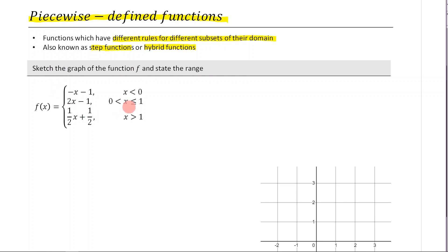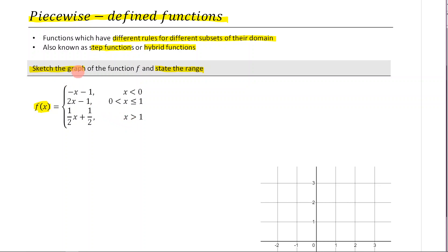The first thing we're going to do is sketch the graph of the function f and state the range. Our piecewise function is composed of three different rules, and each of these rules has a corresponding domain. We need to make sure that we sketch each rule correctly across its correct domain, and we're just going to deal with them one by one.